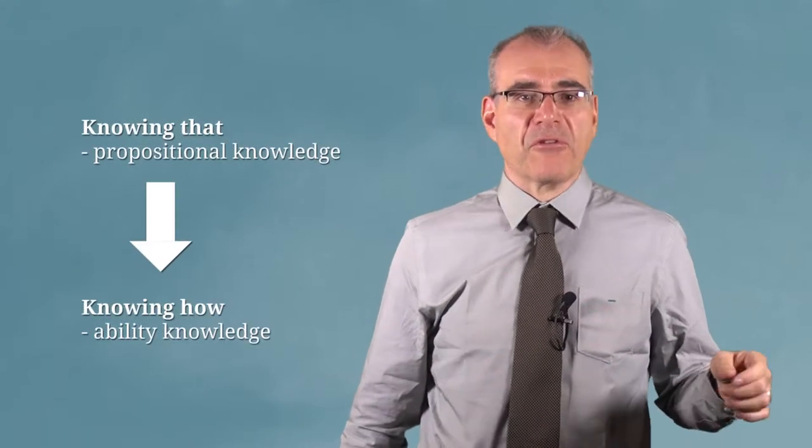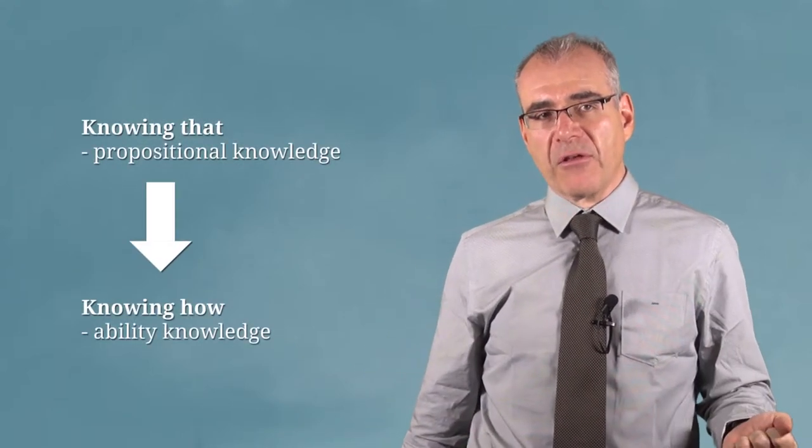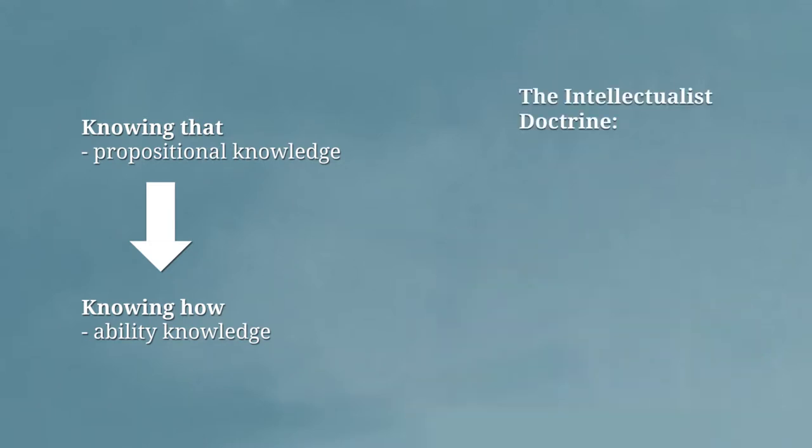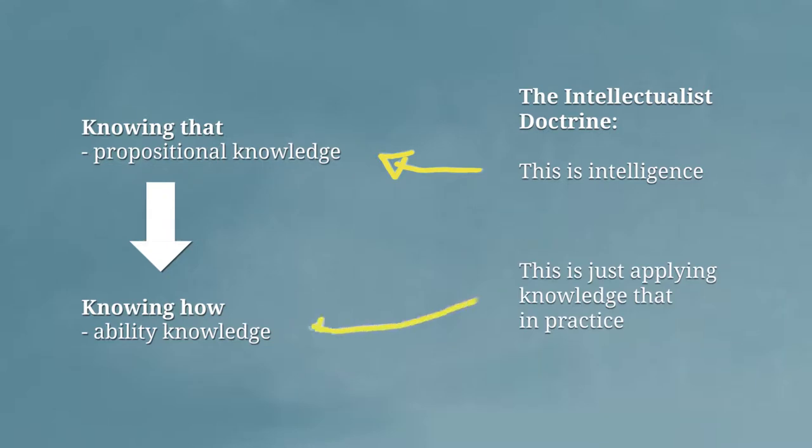Ryle will now say after distinguishing between knowing how and knowing that, that it's tempting, especially for those that he considers to be part of the Platonic and Cartesian tradition that's also taken up by many other philosophers in the Western tradition, that it's tempting to say that all knowing how must be the result of some kind of propositional knowledge. And Ryle talks about what he refers to as the intellectualist doctrine. That intellectualist doctrine is precisely the view that all intelligence is a matter of apprehending truths, and therefore behaving intelligently is a matter of applying that apprehension of truths to action, to agency.